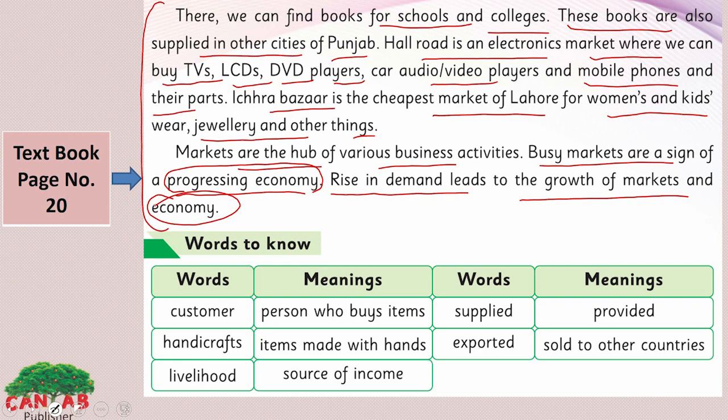So we have read about how many things we can find in Lahore. Hall Road is an electronic market where you can find TVs, LCDs, DVD players, audio and video players, mobile phones, and their parts. Ishra Bazaar is known for the cheapest things in Lahore.